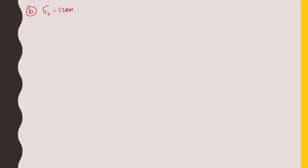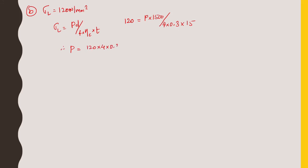For second condition: σl = 120 N/mm². Using σl = p·d / (4·ηc·t): 120 = p × 1500 / (4 × 0.3 × 15). Therefore p = (120 × 4 × 0.3 × 15) / 1500 = 1.44 N/mm². This is the second value.